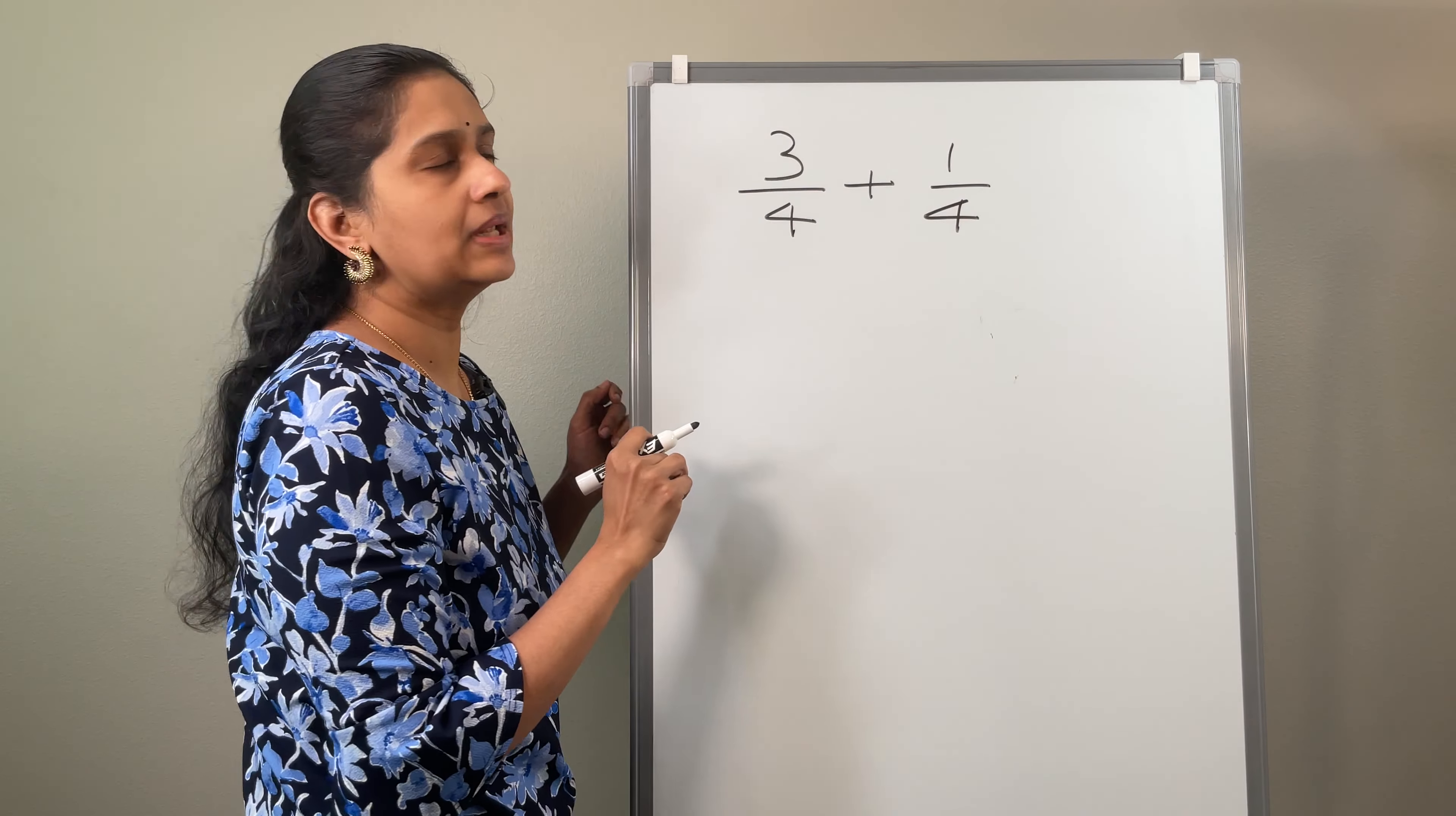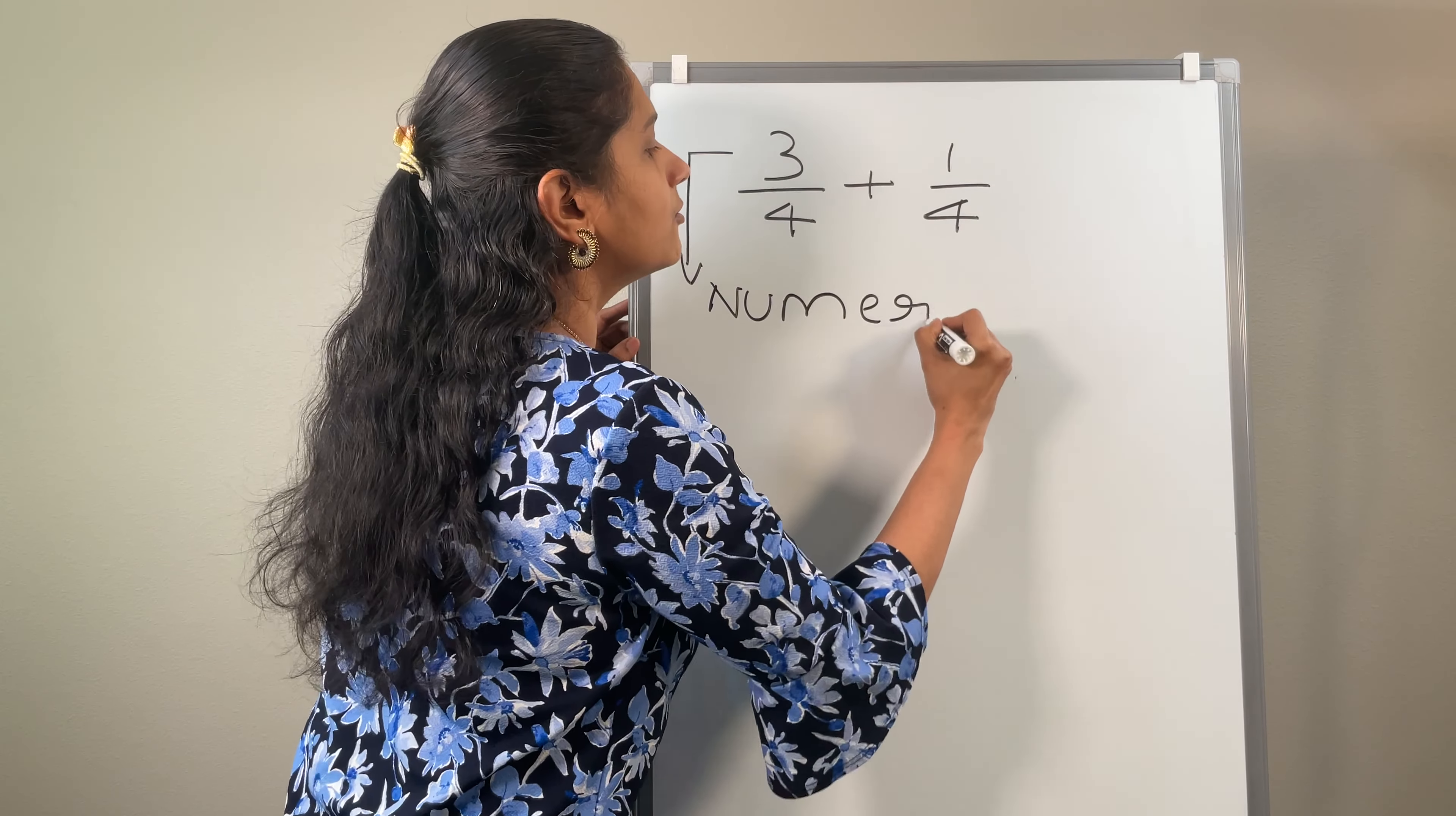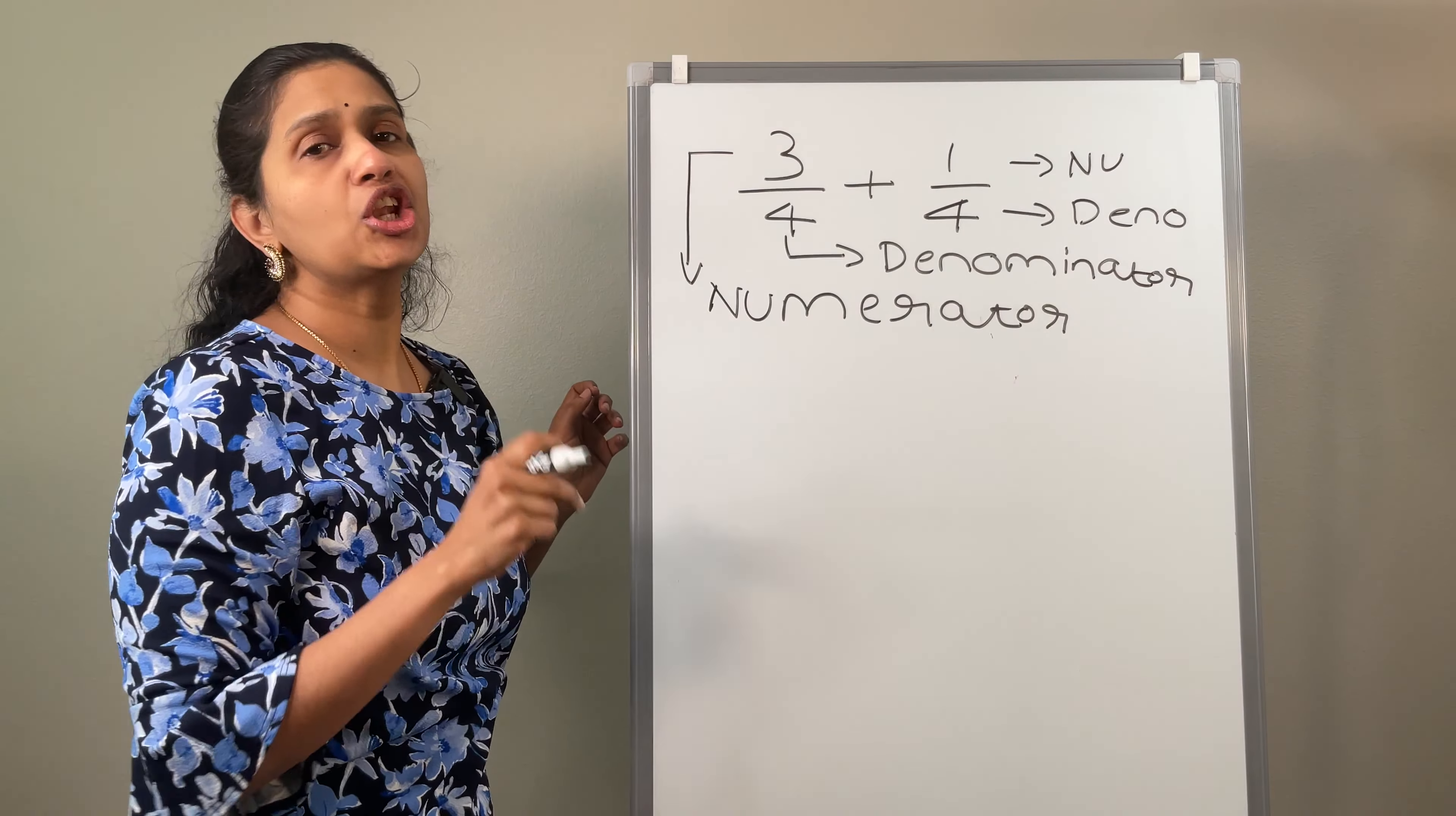Let us consider this example. Here, this 3 is called the numerator and the 4 is referred to as denominator. Similarly, here the upper part 1 is called the numerator and the 4 is referred to as the denominator. The upper part is called the numerator. The down part is called the denominator.